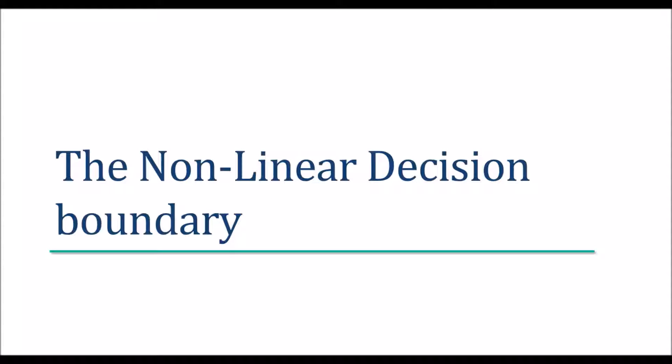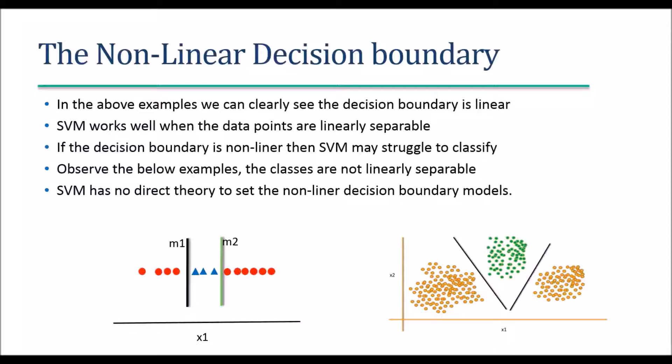What if the decision boundary is nonlinear? Till now we have seen a linear classifier. SVM does a good job finding a linear classifier with maximum margin. But what if the classes are arranged like positive, negative, positive — or alternating patterns? In that case, fitting one line and finding the maximum margin may not work. SVM struggles to classify when the decision boundary is nonlinear — when there is no direct linear decision boundary, SVM doesn't know how to fit a model.